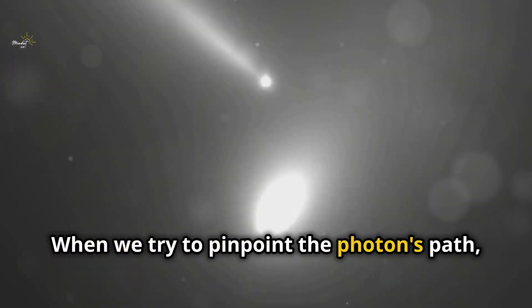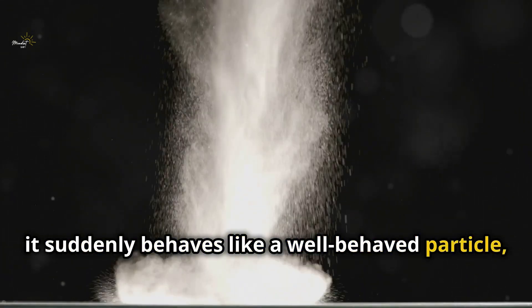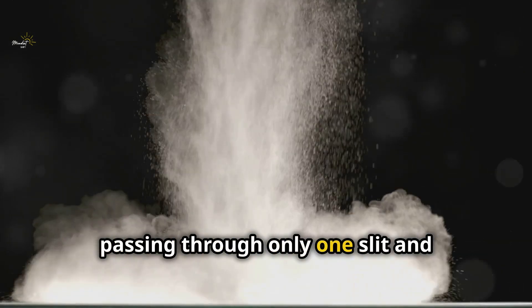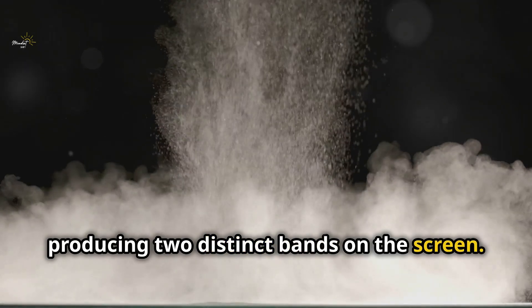When we try to pinpoint the photon's path, it suddenly behaves like a well-behaved particle, passing through only one slit and producing two distinct bands on the screen.